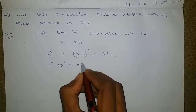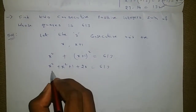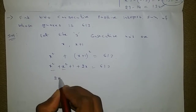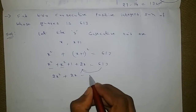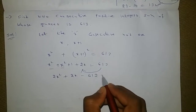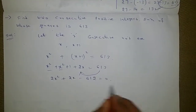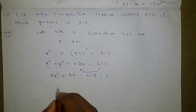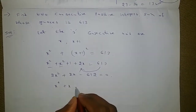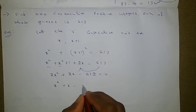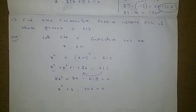Expanding: x squared plus x squared plus 2x plus 1 equals 613, giving 2x squared plus 2x minus 612 equals 0. Dividing all terms by 2, we get x squared plus x minus 306 equals 0.